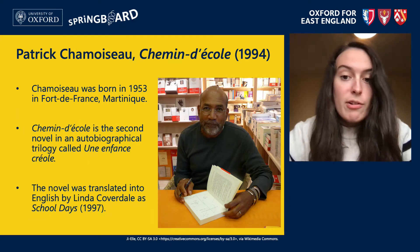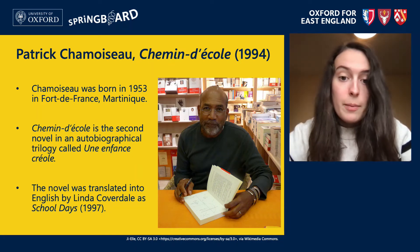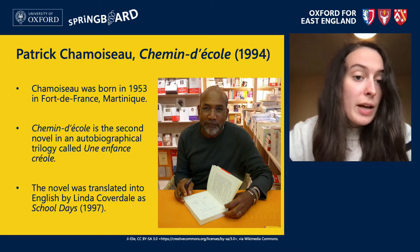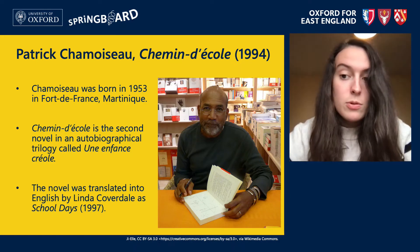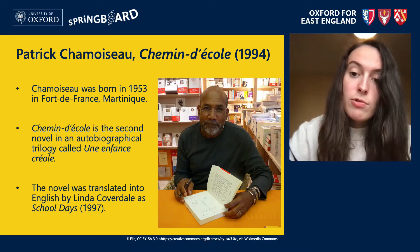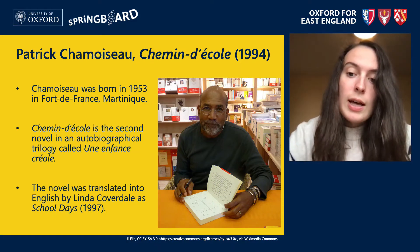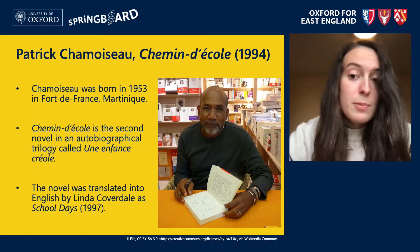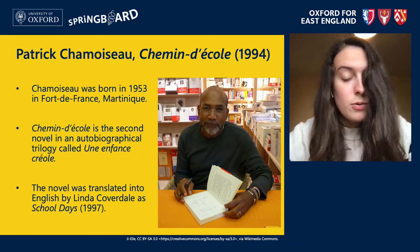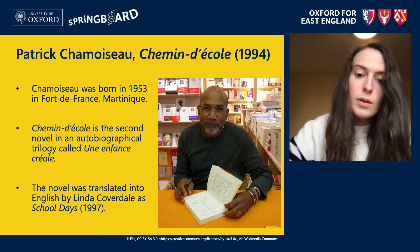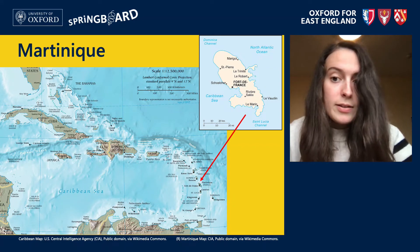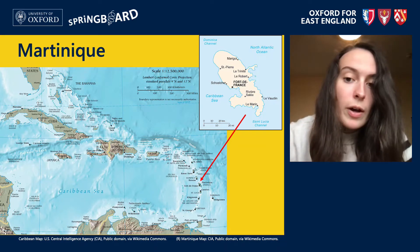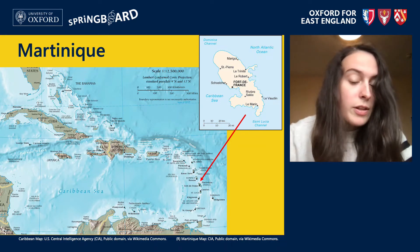The text we're going to look at is an autobiographical novel by the Martinican writer Patrick Chamoiseau, who is pictured here. The book is called Chemin d'École, which translates literally as something like 'the way to school,' though the English translation uses the name School Days. It's the second instalment of a trilogy called Une Enfance Créole, or A Creole Childhood. In this book, Chamoiseau narrates his lived experience of attending a school system still heavily shaped by the colonial discourses we have just discussed. As you remember from earlier, Martinique — where Chamoiseau is from — is one of the overseas regions that remains a constituent part of France, located in the Caribbean in what is known as the Lesser Antilles, on the right-hand side of a map of the Caribbean.